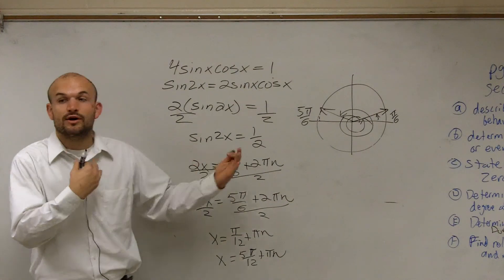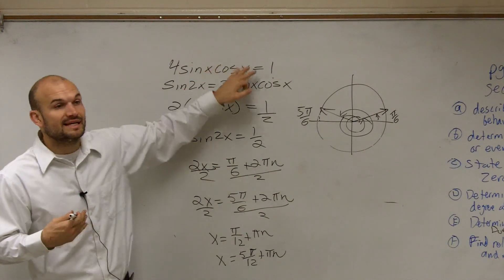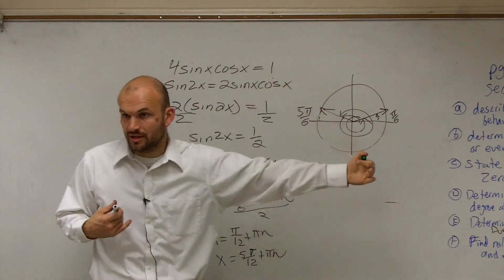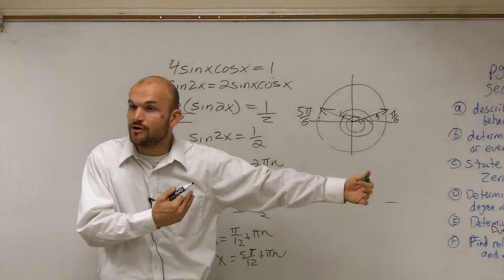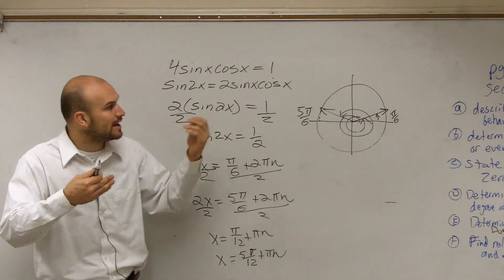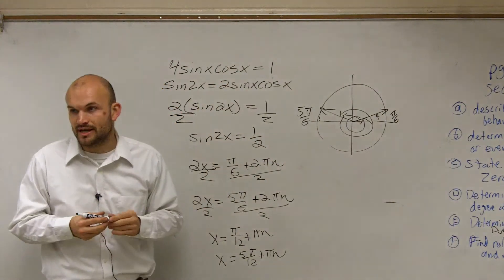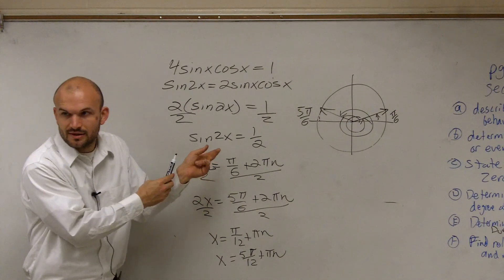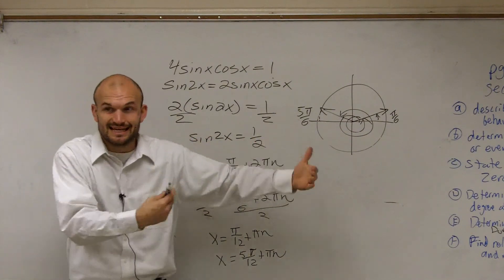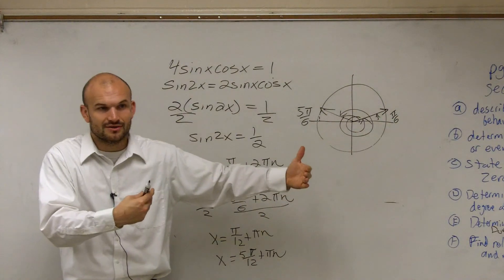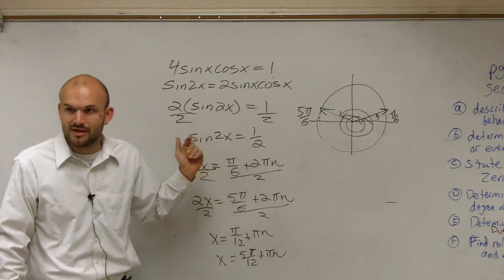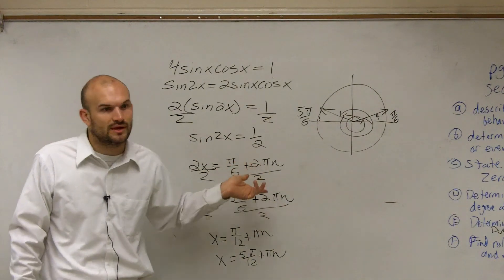So we can work one of two ways. We can either be given a multiple angle and then apply a formula, or we can actually be given the formula and then rewrite it going backwards as a double angle and then solve. Because now you know how to solve for double angles, right? So if you have an equation and you see a multiple angle, you can now just rewrite it so it is a multiple angle and then solve it as the multiple angle formula.